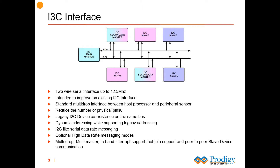This bus architecture effectively addresses the problem of multiple pins currently covered by i2C and SPI, and supports low-power, high-speed, and other critical features. The MIPI standards have announced the i3C 1.1 specifications, which support multi-lane and a few other enhancements. The i3C working group is finalizing the i3C 1.1 CTS and it is likely to be announced later this year.